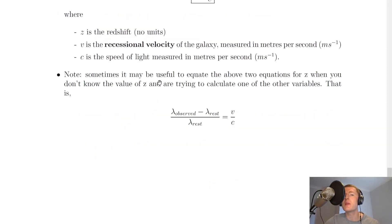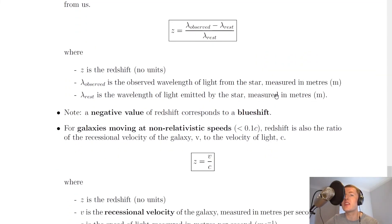Lastly, it says to note that sometimes it may be useful to equate the above two equations for z when you don't know the value of z and are trying to calculate one of the other variables. That is, you might want to equate lambda observed minus lambda rest over lambda rest equals v over c. Another thing you might often be asked to do is to calculate z using one of these two equations, and then plug your answer for z into the other one to find out a different variable such as the recessional velocity or one of these wavelengths.